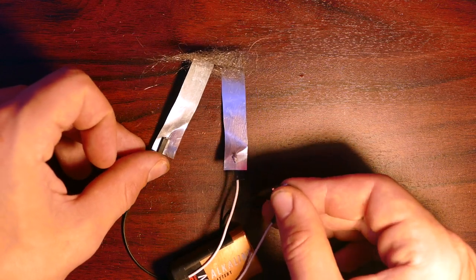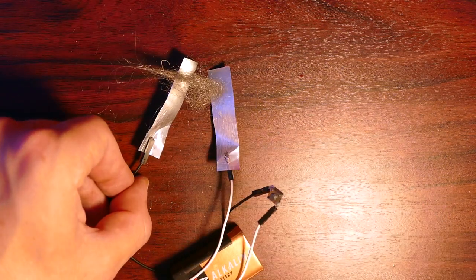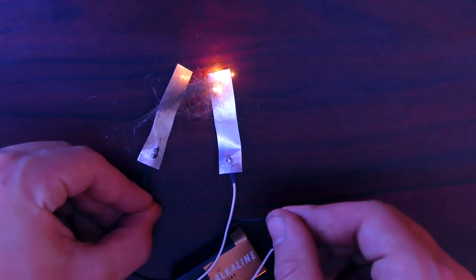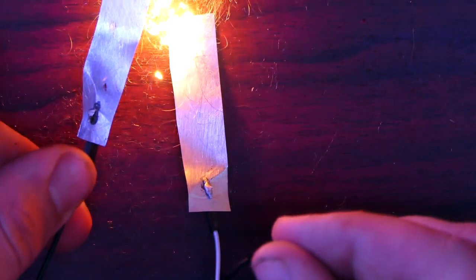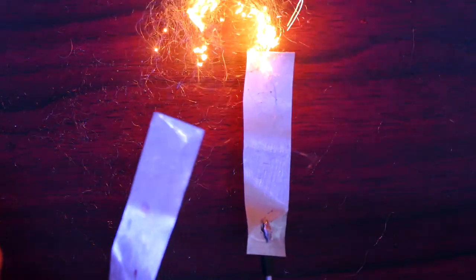And there we go, got some sparks. Turn the light off so you guys can see. Now all that's left to do is attach this to the crossbow.